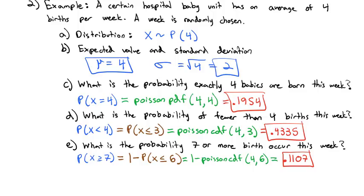That's the Poisson distribution — very similar to the binomial. The key difference is that we're now talking about the number of successes in a fixed interval, usually a time interval. Take a look at the homework assignment to practice, and when you come to class we'll continue working with the Poisson distribution.